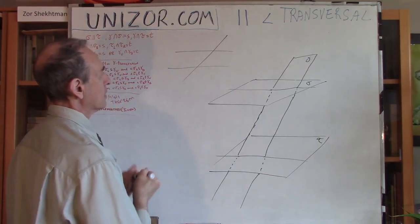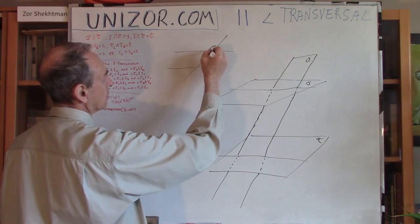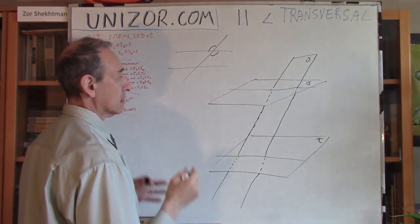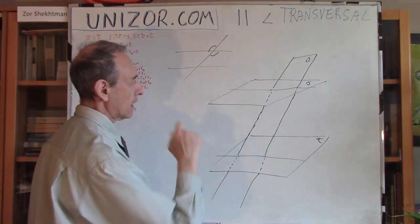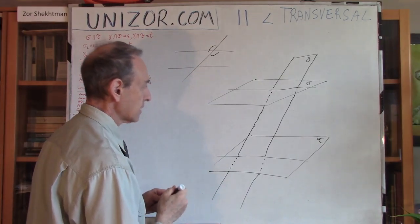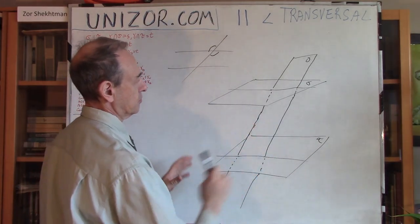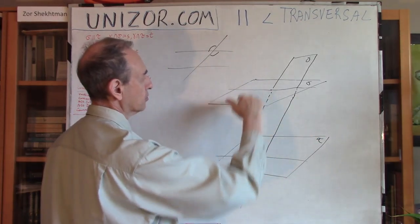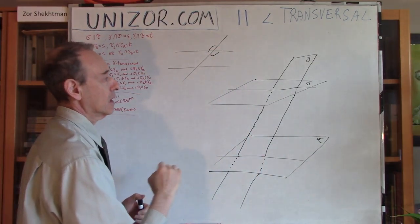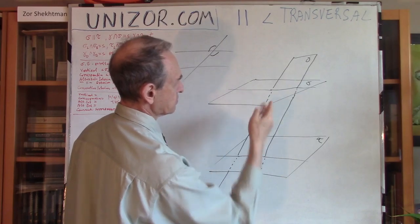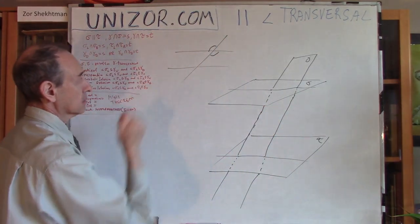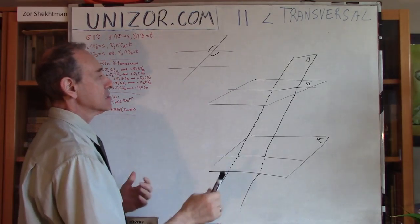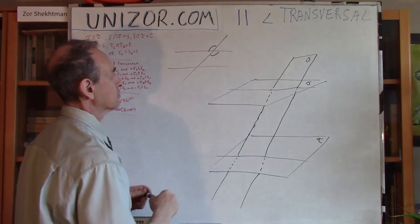That's exactly the same as in plane geometry where the intersecting line is the transversal. Now, remember these angles are vertical. Let's make a slightly different view — if you look really horizontally, the two parallel planes appear as lines, and this plane would look like a single line, so we'd just see the edges.